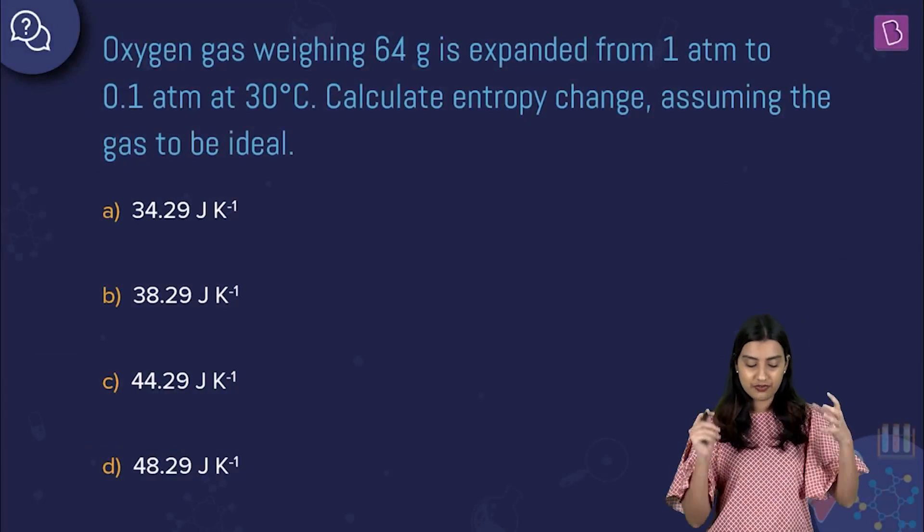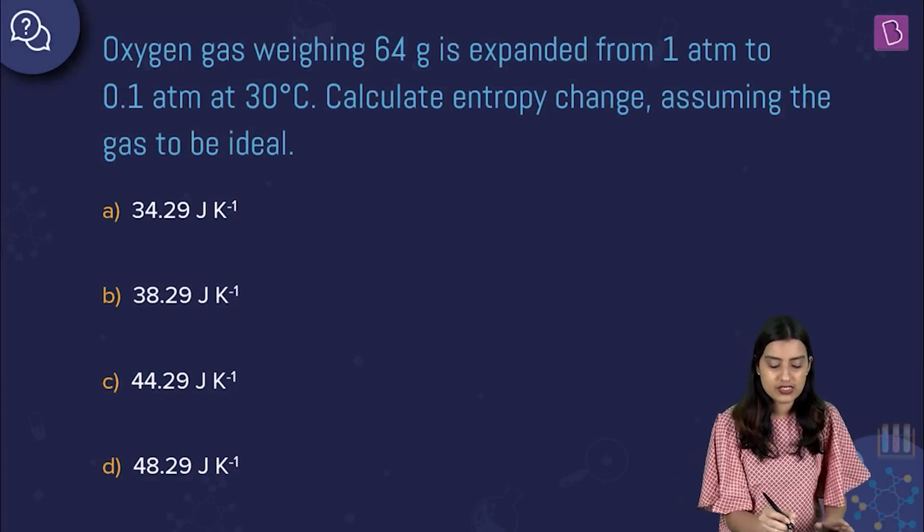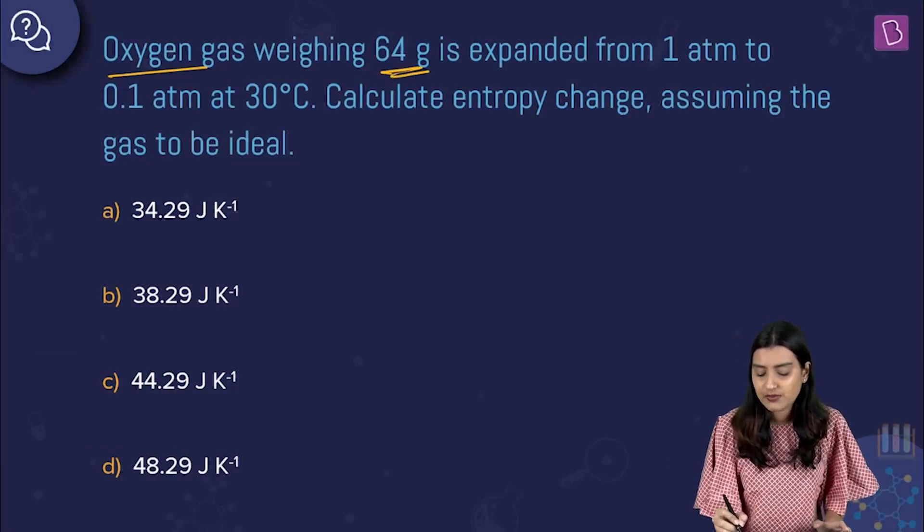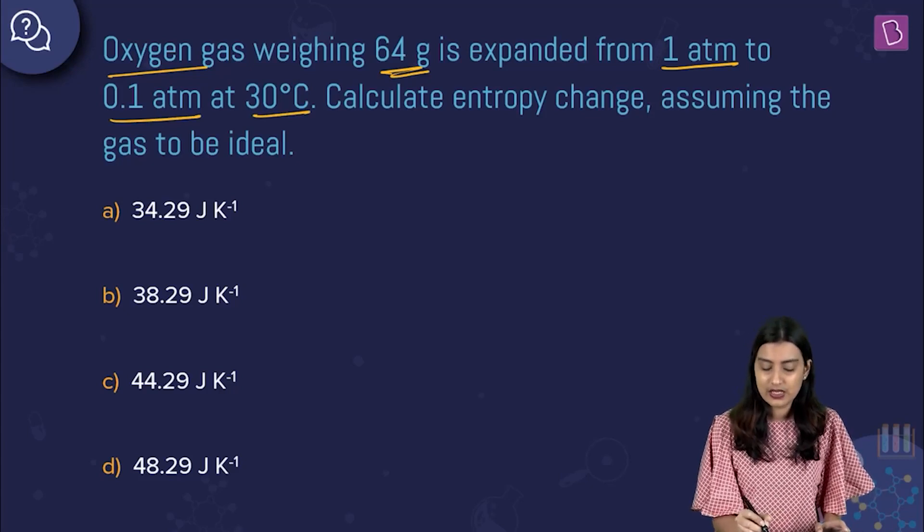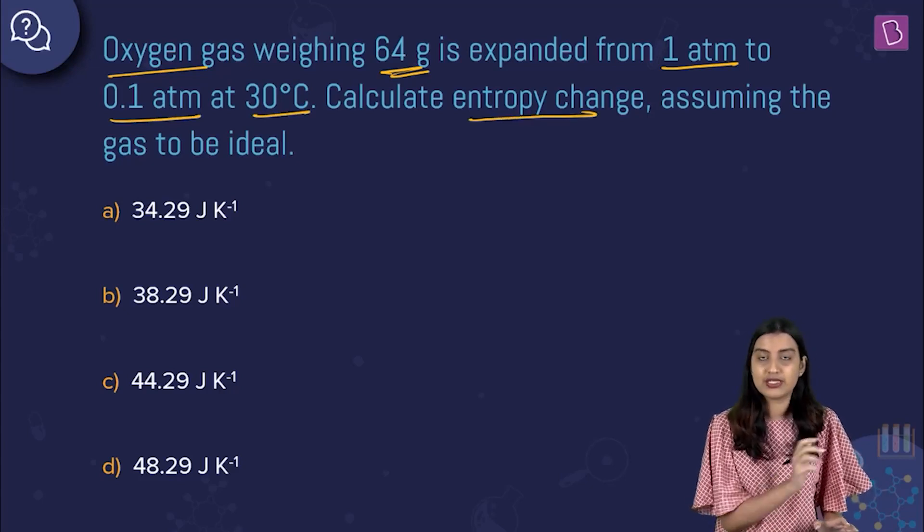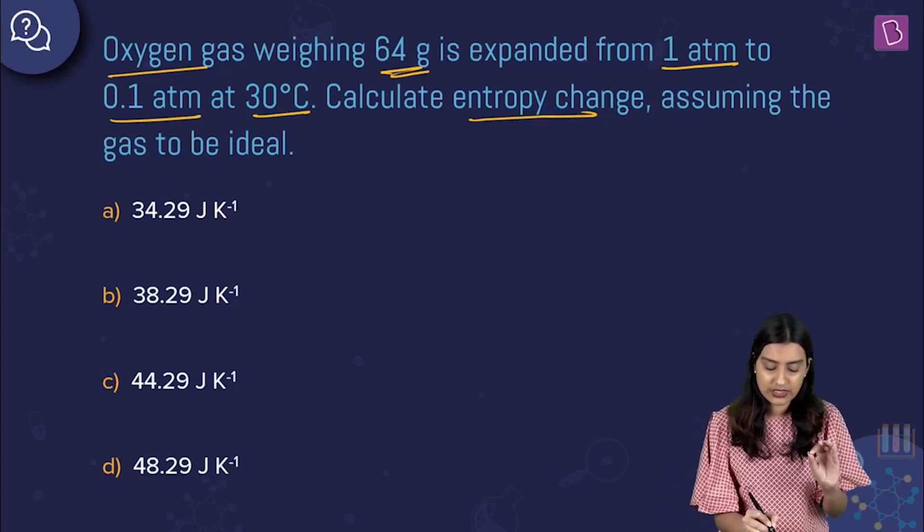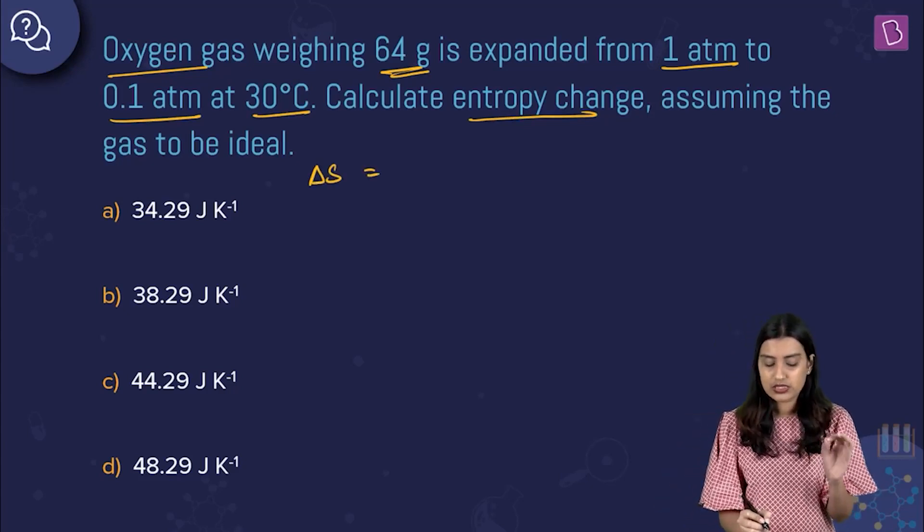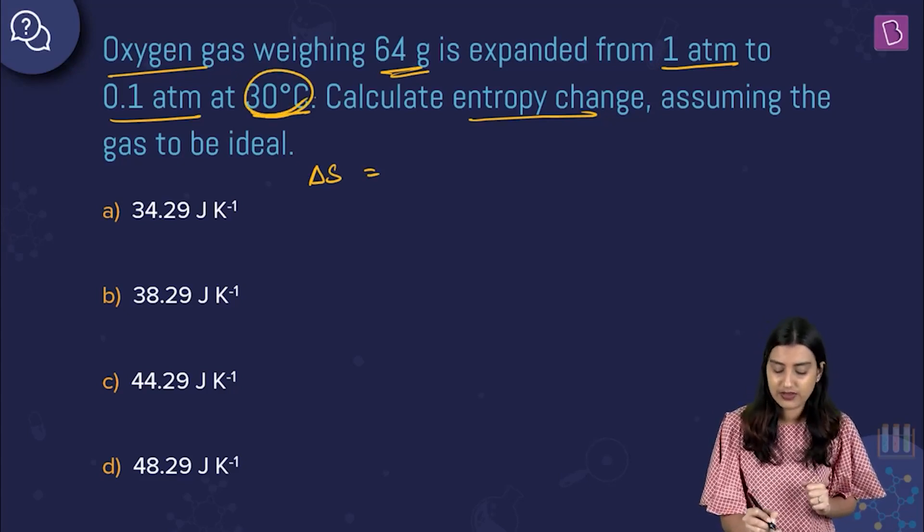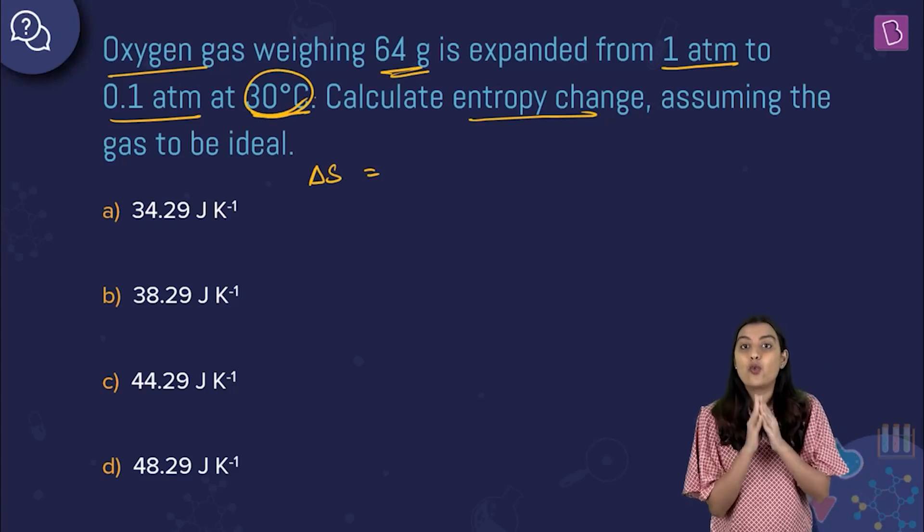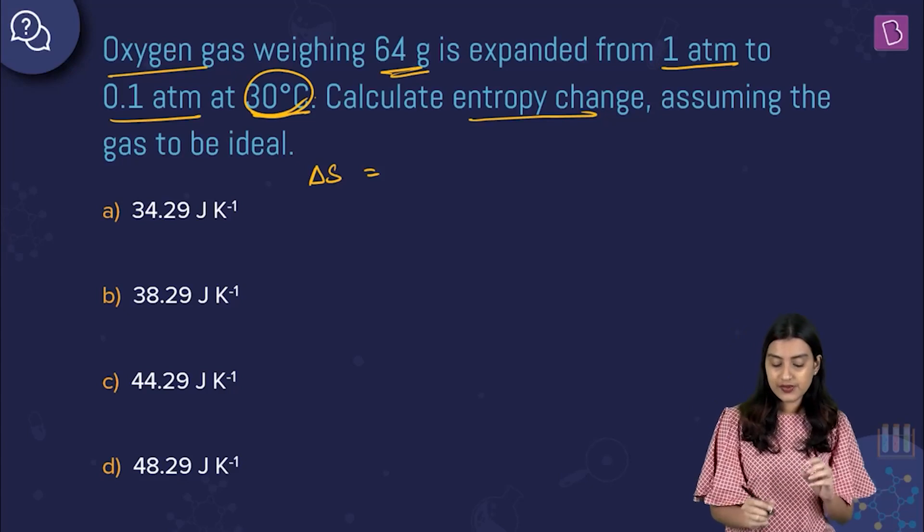Alright. So in this question, which basically we have from the chapter of thermodynamics, they're saying that oxygen gas weighing 64 grams is expanded from 1 atm to 0.1 atm at 30 degrees Celsius. Calculate entropy change assuming the gas to be ideal. Very first thing is you need to calculate entropy change that is delta S. This is an isothermal expansion. How do I know? Because they are giving me only one temperature value.